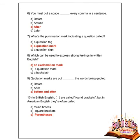Next question: quotation marks are put where relative to the words being quoted? Options are before, after, and before and after. Option C is correct — before and after. Next question: in British English, brackets are called round brackets, but in American English they are often called what? Options are round branches, square brackets, and parenthesis. Option C is correct — parenthesis.